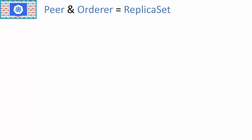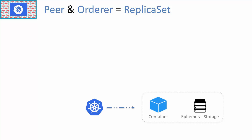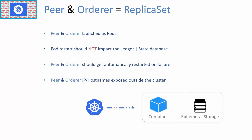Now let's consider defining the peer and orderer in a replica set. In a replica set, they are still launched in pods as containers, but storage is still ephemeral, so requirement two is not met. If a pod fails, the replica set does restart it, so requirement three is met. Requirement four can be met with Kubernetes services. Since not all requirements are met, we cannot use the replica set controller for the peer and orderer setup.